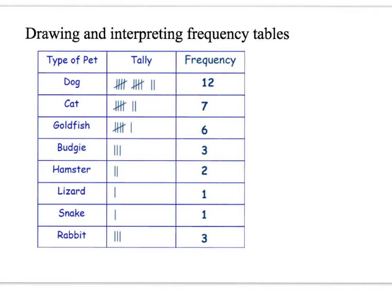You could also have a situation where the data is continuous — for example, height. You might have ranges between 150 and 160 cm, 161 and 170 cm, 171 and 180 cm, and then record the number of people within each height range. When that happens, you can then plot a histogram, which is the next slide.